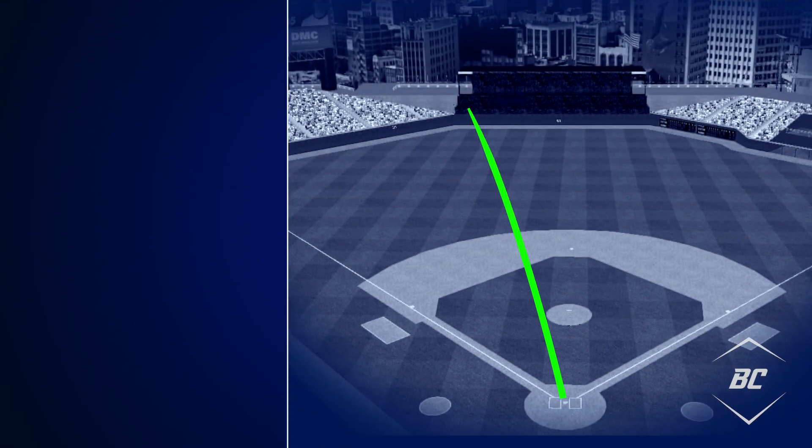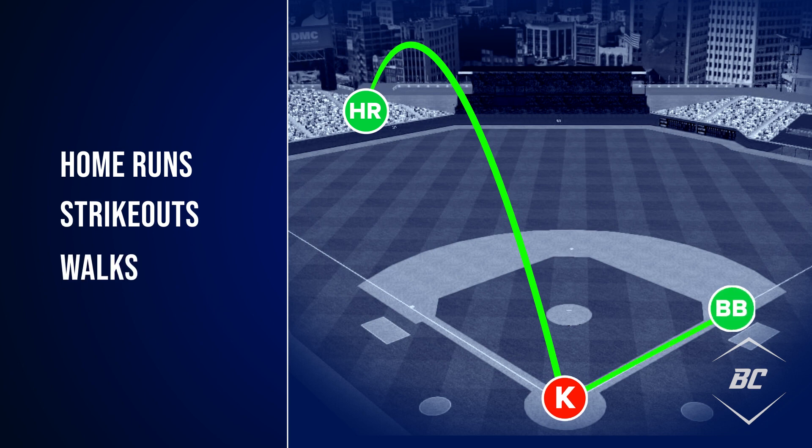Now it's time to take it a step further by diving into expected fielding independent pitching, otherwise known as XFIP. We know that fielding independent pitching is a measurement of a pitcher's ability to influence the three true outcomes: home runs, strikeouts, and walks. FIP takes out the random nature of balls put in play and leaves us with a more accurate indicator of how many runs a pitcher should have given up.